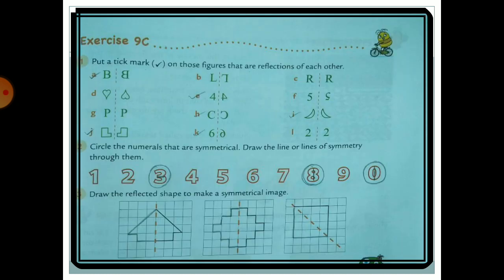Question 2: Circle the numerals that are symmetrical and draw the line or lines of symmetry through them. 1 — no symmetry. 8 — yes, symmetrical (horizontal and vertical lines). 9 — no. 0 — yes, symmetrical. So from the given numerals: 3, 4, 5, 6, 7 have no symmetry lines; 8 and 0 are symmetrical and get circled.